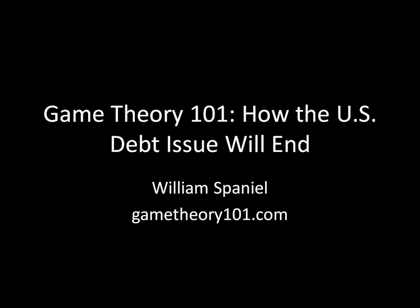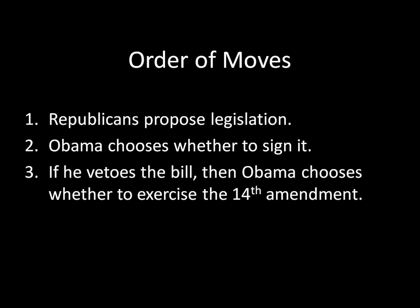To analyze this game theoretically, we need to figure out the order of moves and the moves that each player has, and figure out the preferences that each player has over the outcomes associated with those moves. Let's start with the order of moves. First, the Republicans propose legislation — essentially, they pass a bill through Congress that Obama then chooses whether to sign. So first the Republicans propose legislation, then Obama chooses whether to sign it, and if Obama vetoes the bill, then Obama chooses whether to exercise the 14th Amendment.